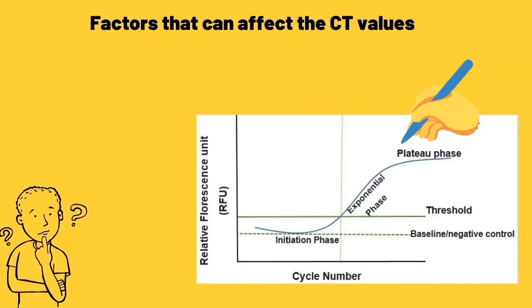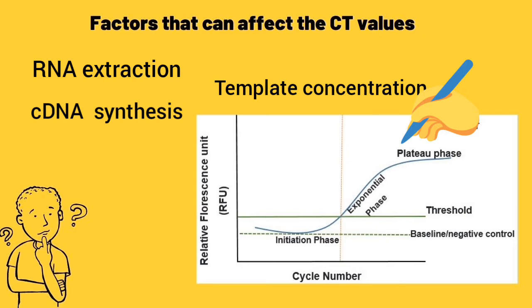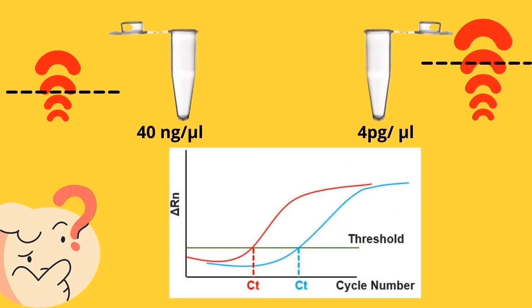CT values depend on several factors. For example, the quality of RNA extraction, cDNA synthesis, and the amount of template in samples affect CT value. For example, let's say we have two samples: one of them is 14 nanogram per microliter and another one is 4 picogram per microliter.